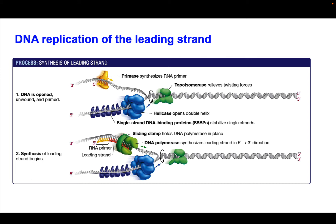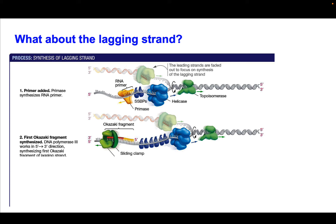Now let's consider the lagging strand. What we're going to do is make little bits of DNA at a time and then glue them together. We still have the single-stranded binding proteins, and what we have is an RNA primer. So we're making a primer going 5 prime to 3 prime, so now we have a 3 prime hydroxyl. What's going to happen is DNA polymerase 3 and the sliding clamp are going to move away from the replication fork, moving down this stretch of DNA.